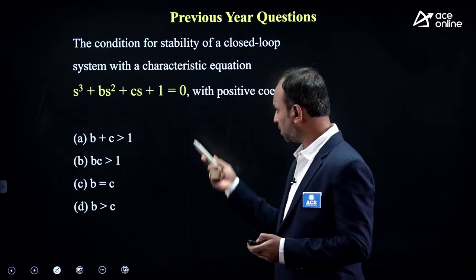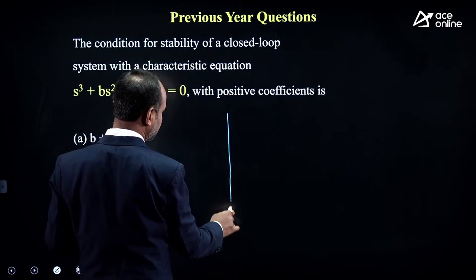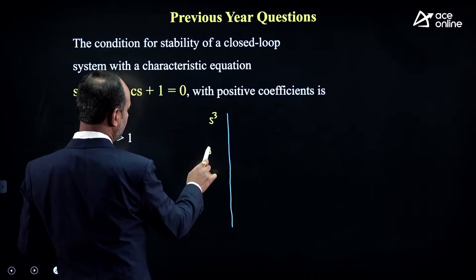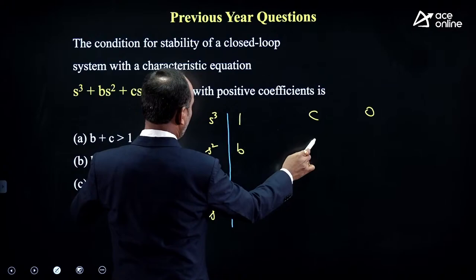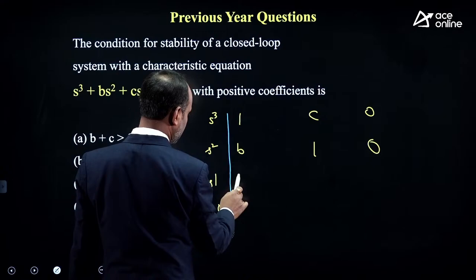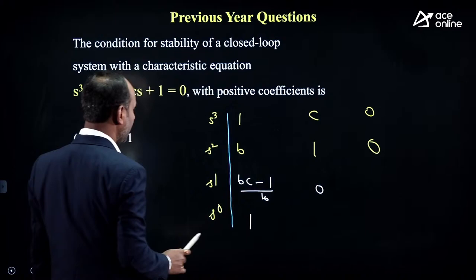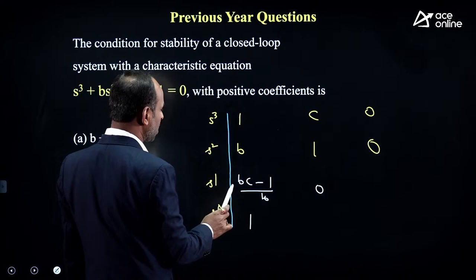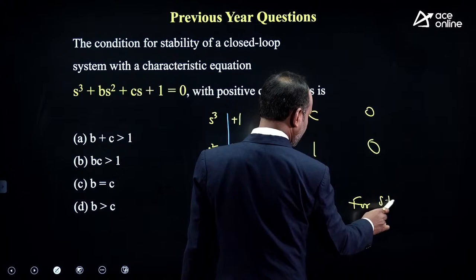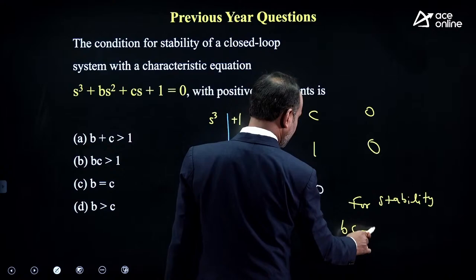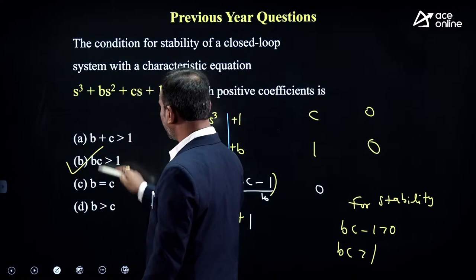Applying R-H stability criterion: arrange the characteristic equation S³ + CS² + BS + 1 in the Routh array. For stability, all first column elements must be same sign. The critical condition: BC − 1 > 0, i.e., BC > 1. Option B is correct. A shortcut technique: internal product (B×C) must be greater than external product (1×1).